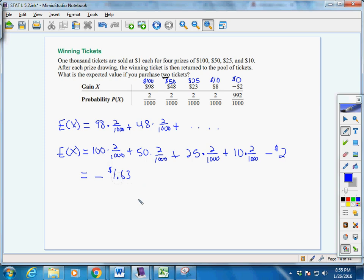That's our expected value, our expected gain. Expected gain negative, that means our average loss per ticket is $1.63.